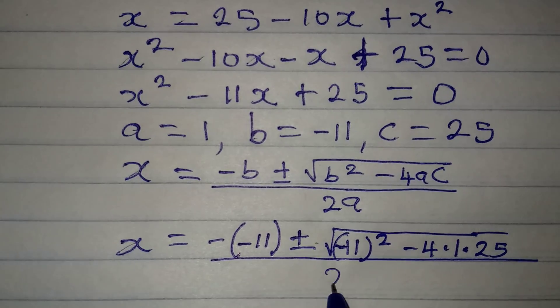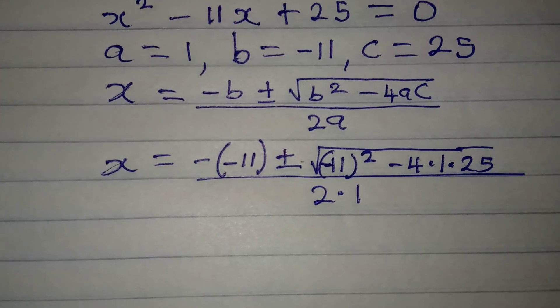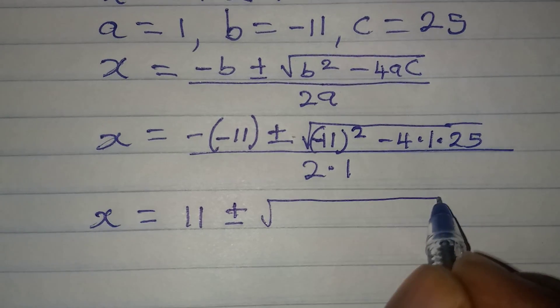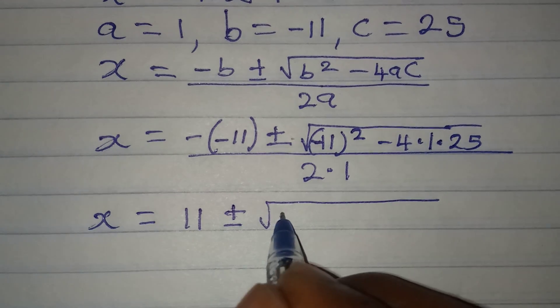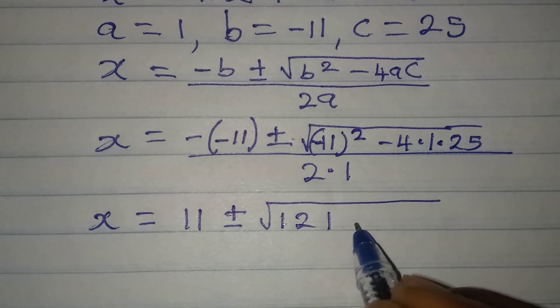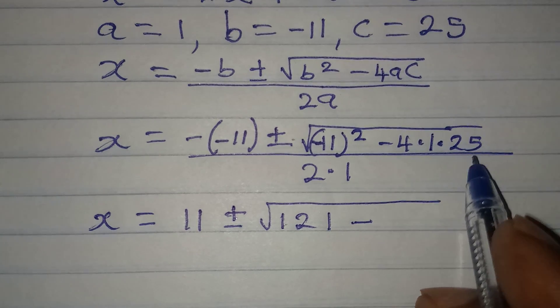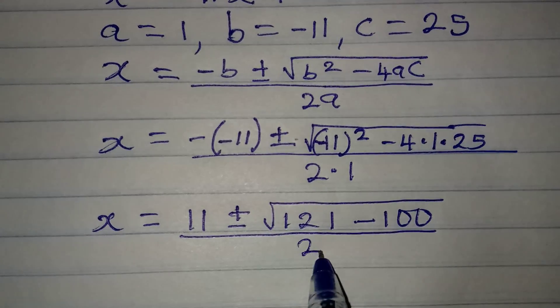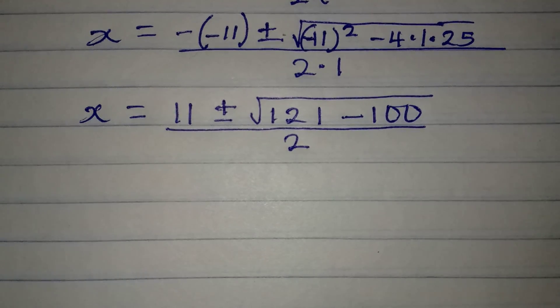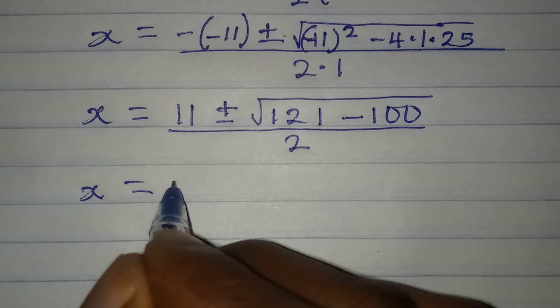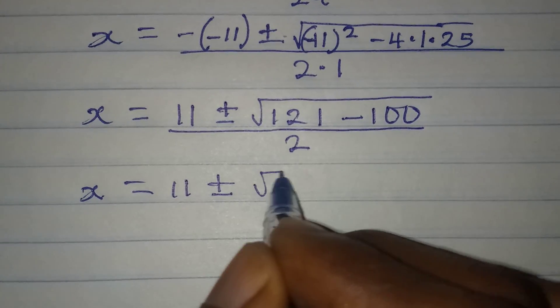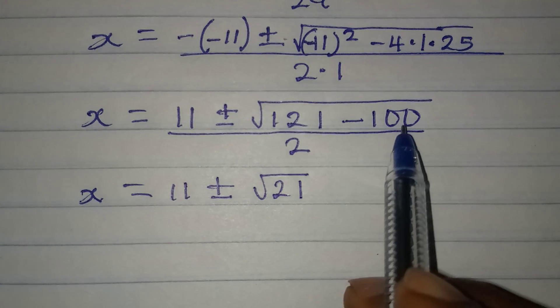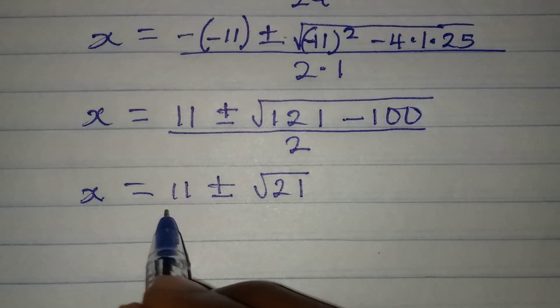Now x will be equal to 11 plus or minus, minus 11 squared will give 121, then minus 4 times 1 times 25 will give 100, and the whole of this will be over 2. Let me deal with what I have in the square root sign. x will be equal to 11 plus or minus square root of 21, because 121 minus 100 is 21, and this will be over 2.